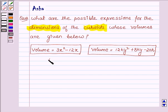So the volume of the first cuboid is 3x² - 12x and the volume of the second cuboid is 12ky² + 8ky - 20k.